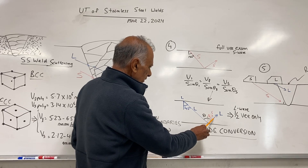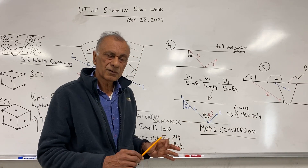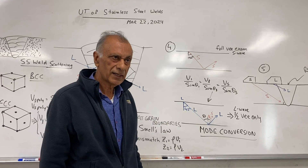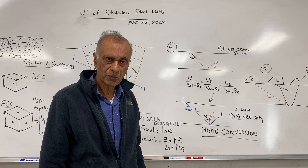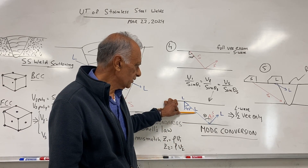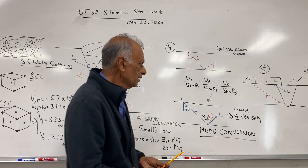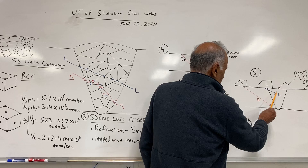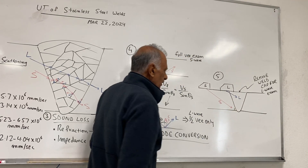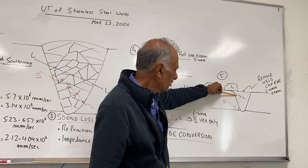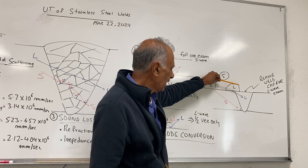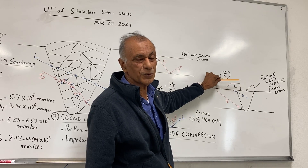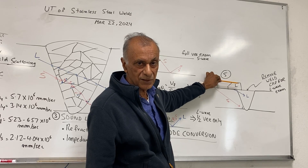Because of mode conversion, the L-wave is not effective for the full-V exam and is limited to the half-V exam. The limitation is that we cannot simply place the L-wave probe away from the weld and have sound travel through it. To illuminate the weld with L-wave in half-V mode, we have to bring the probe close to the weld cap or on top of it, meaning the weld cap must be removed to apply the L-wave probe for inspection of the stainless steel weld.